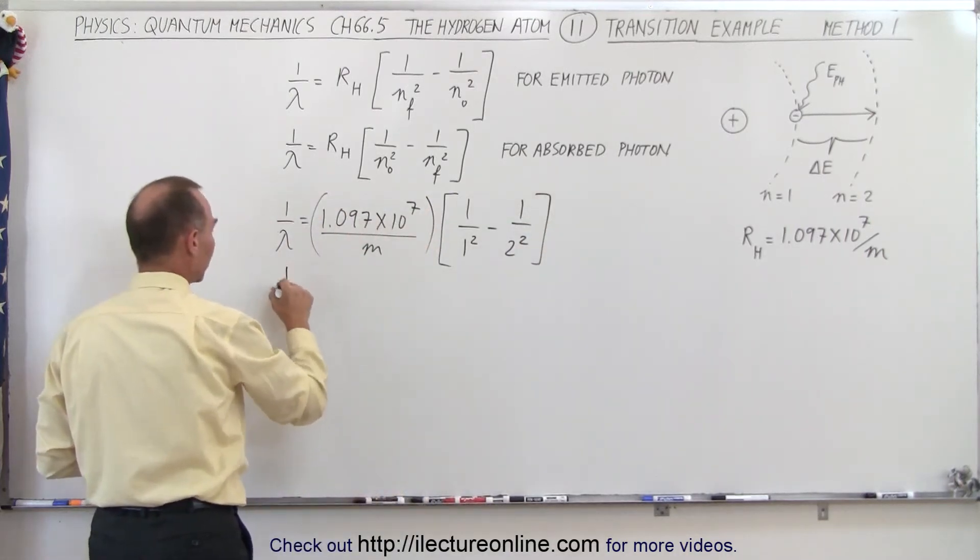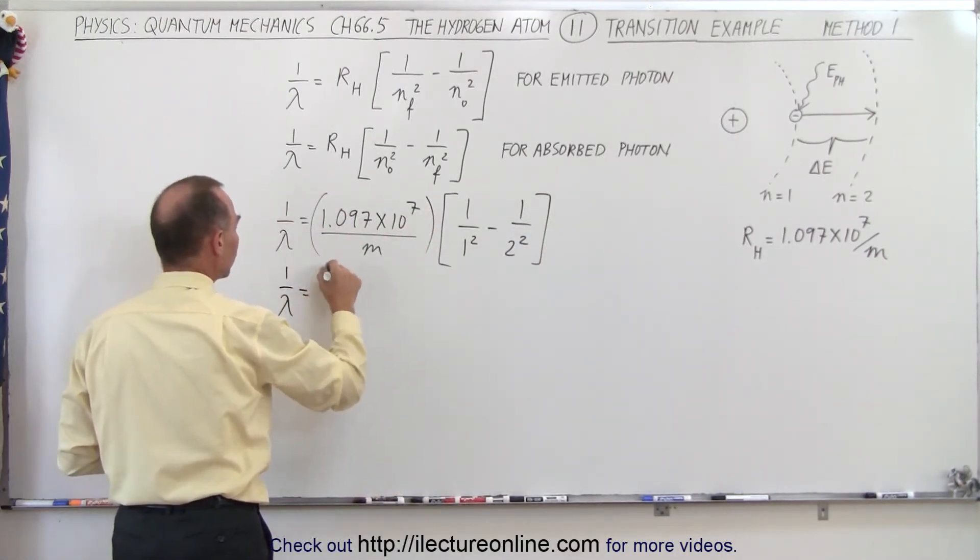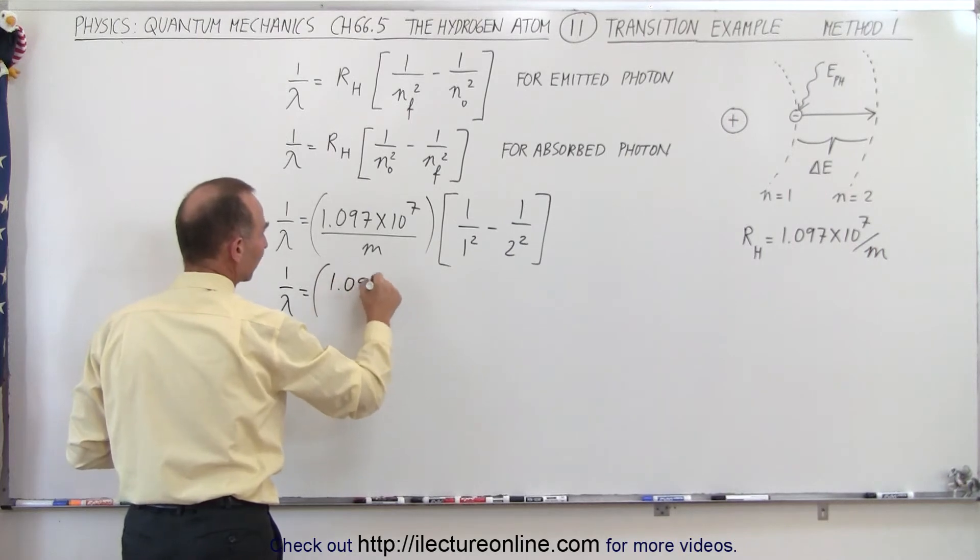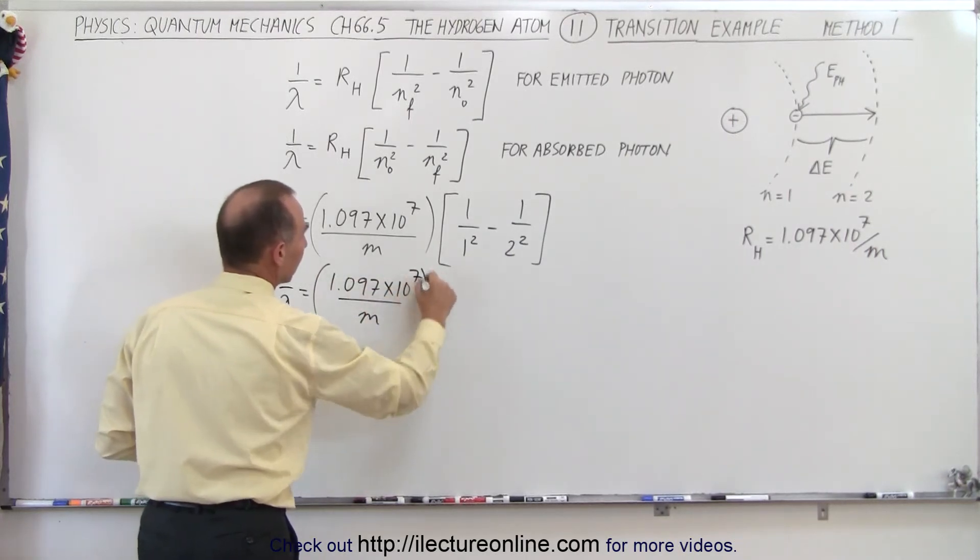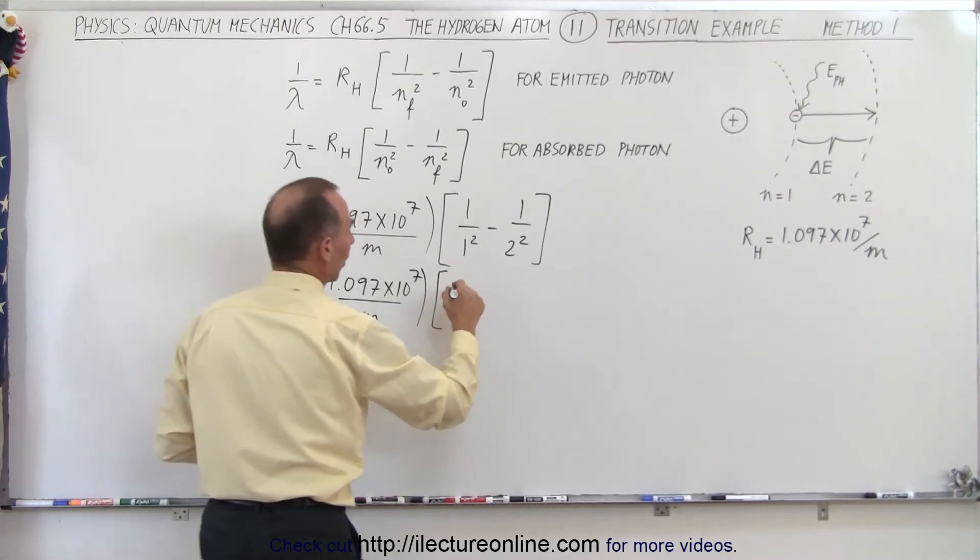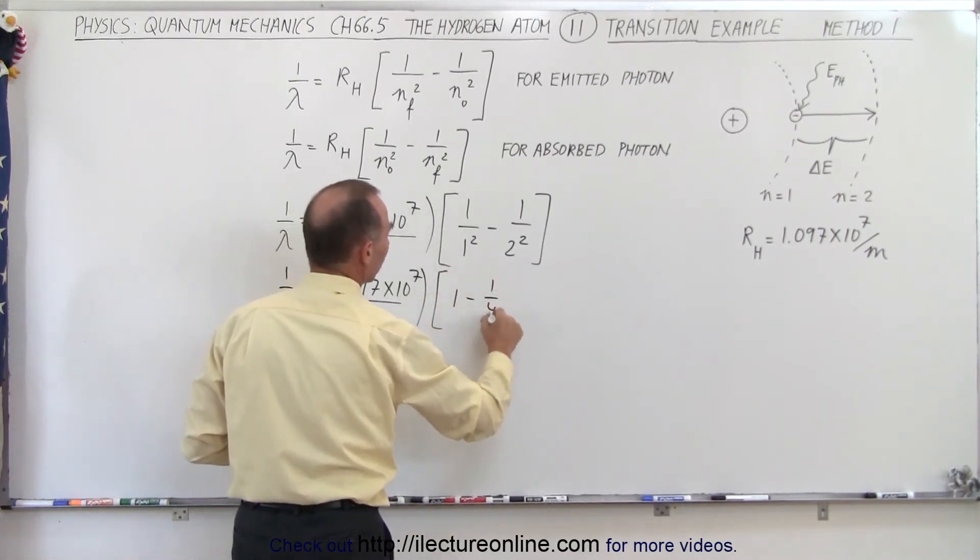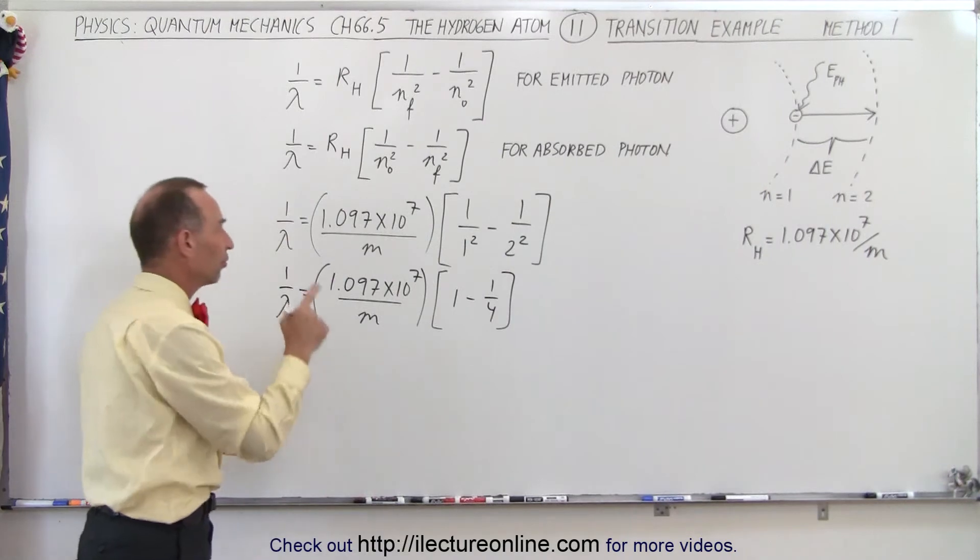So in this case we have 1 over lambda is equal to 1.097 times 10 to the 7th per meter. And in here we end up with 1 minus 1 quarter, which is of course 3 quarters.